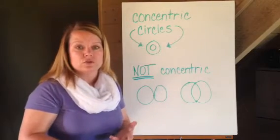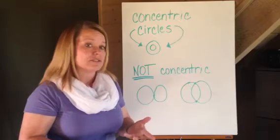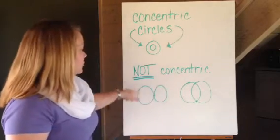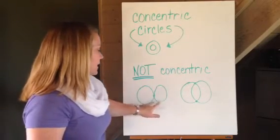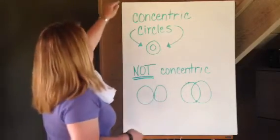All of those circles would be concentric because they don't touch. They don't intersect. These are not concentric because they do touch and they do intersect. So that's the difference between those two.